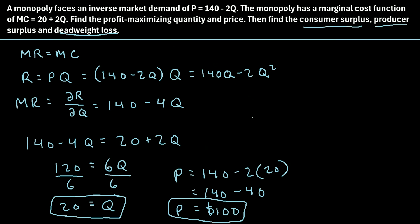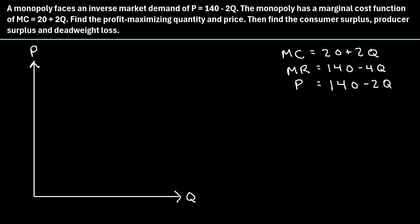To figure that out, it helps to draw a graph with the y-axis as price and the x-axis as quantity Q. We'll graph three lines: the marginal cost, the marginal revenue, and the inverse market demand function. Once we graph these three lines, we'll be able to find consumer surplus, producer surplus, and deadweight loss.